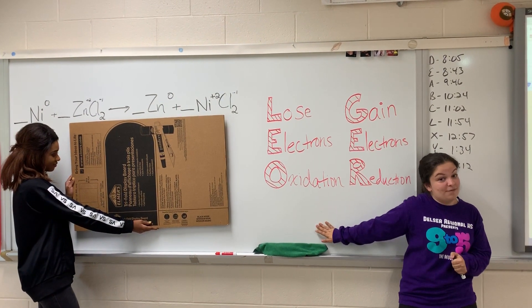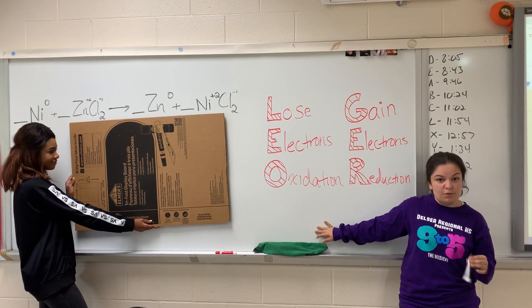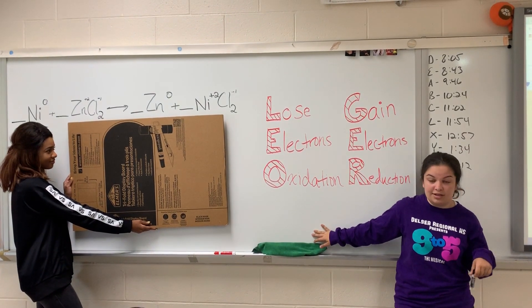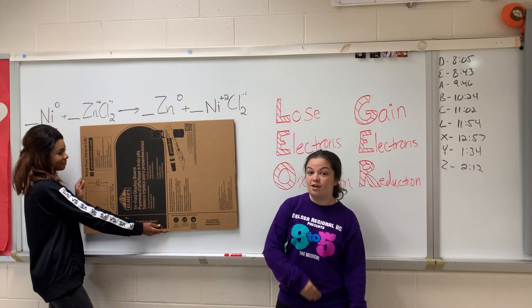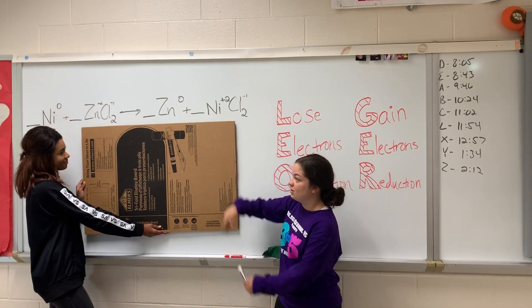LEO GER is an acronym that is used to identify which elements become reduced or oxidized. As you can see over here, we have a typical chemical reaction.